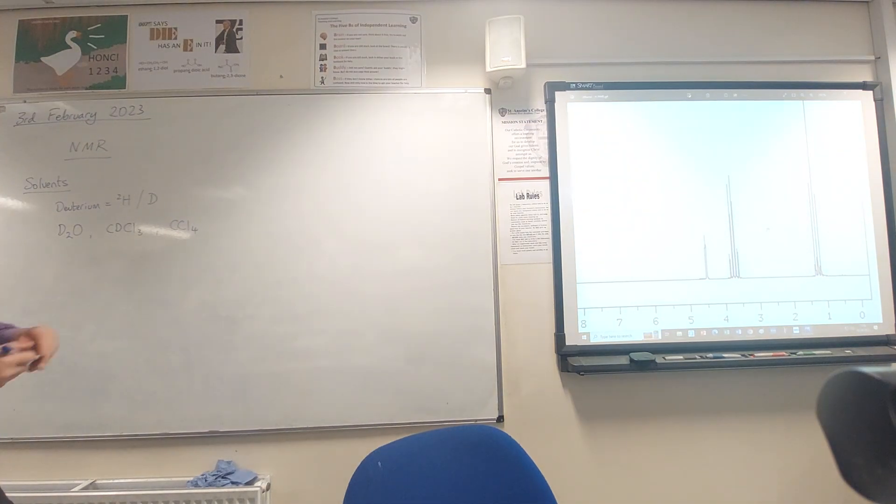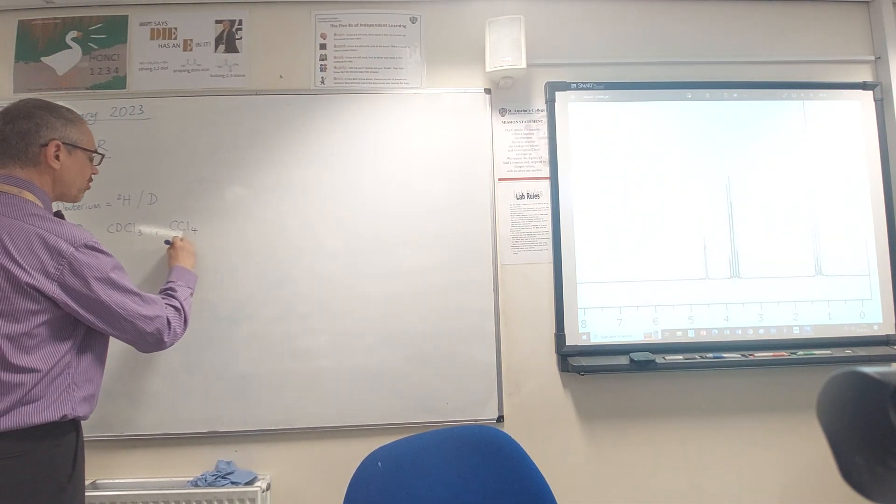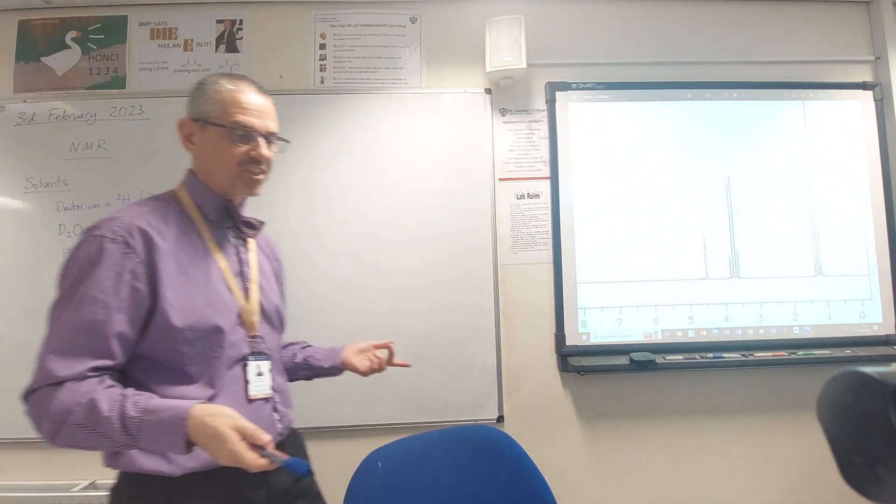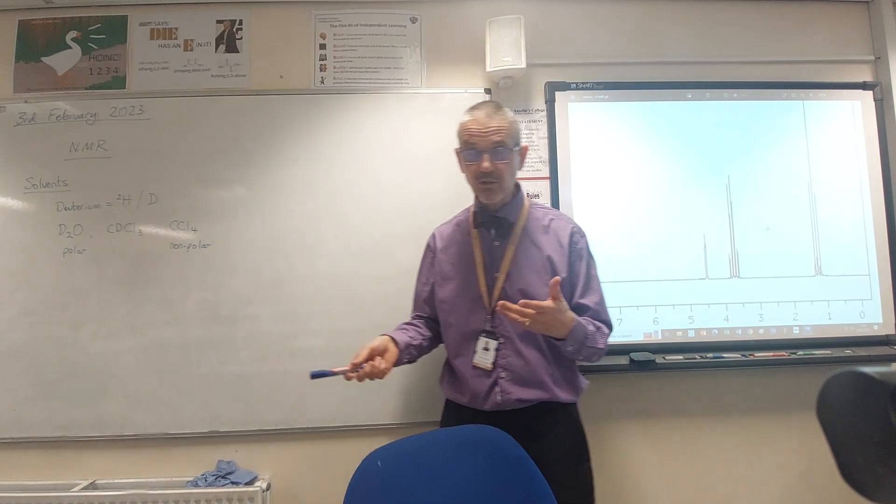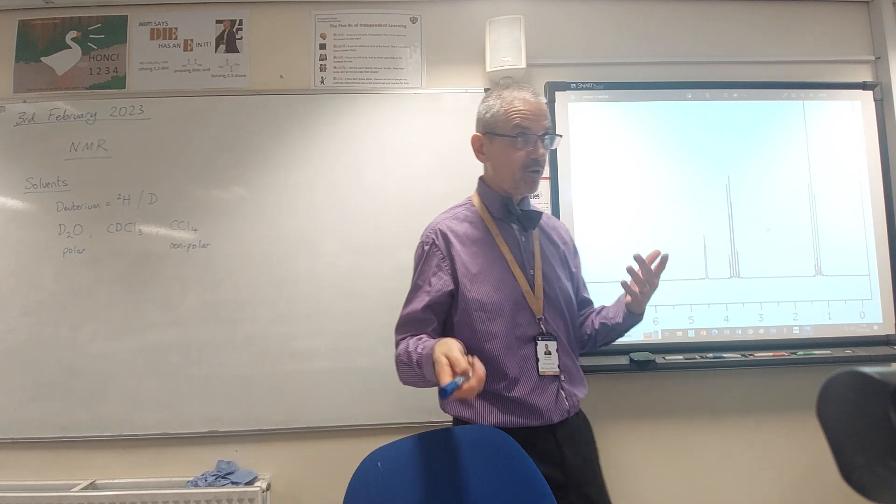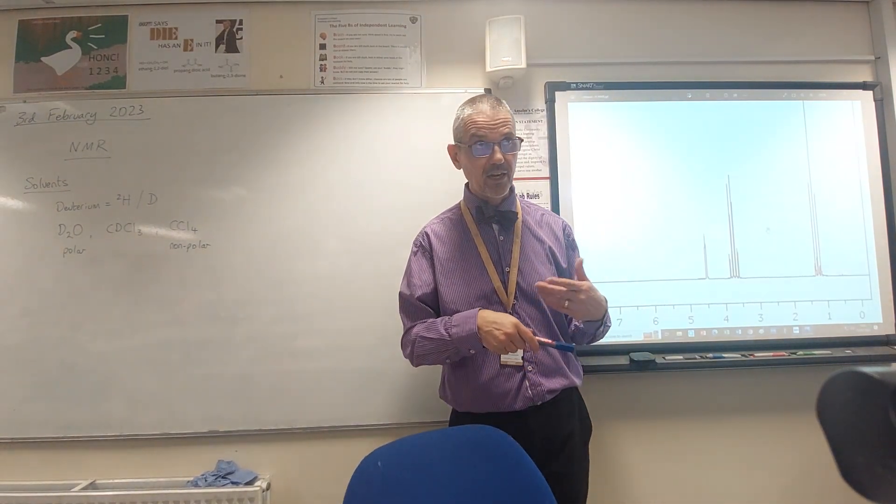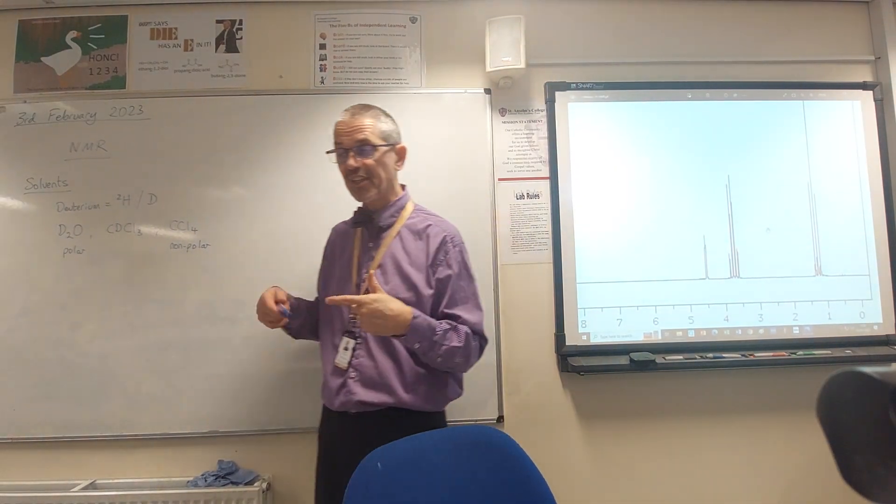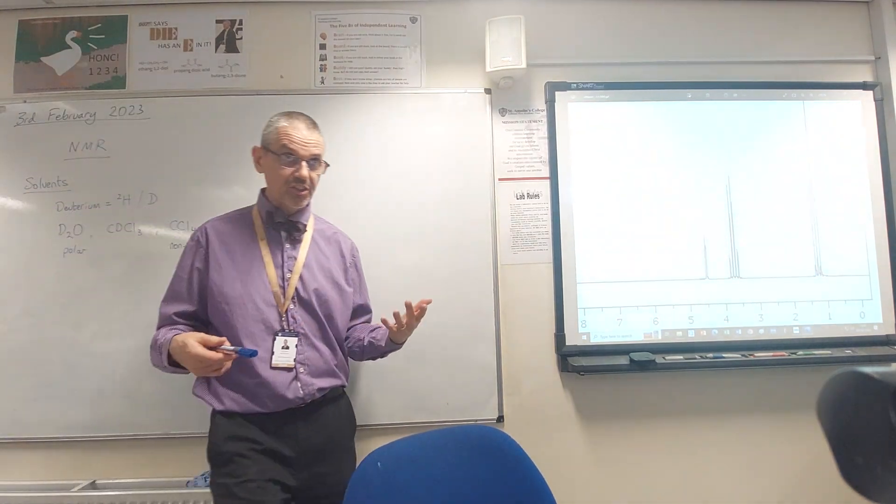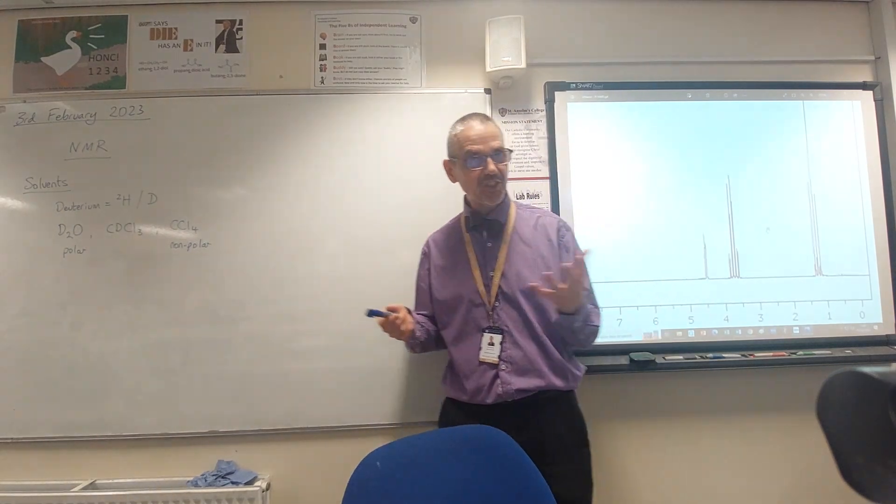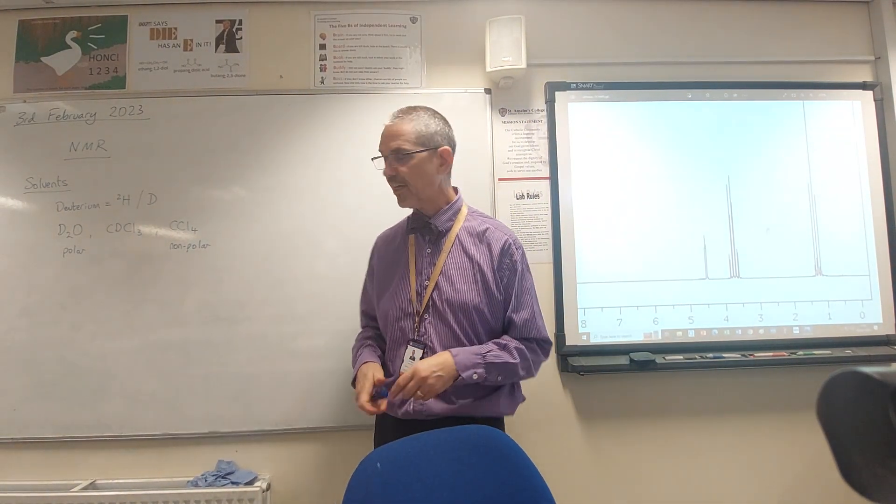This gives us a bit of a range. CCl4 is very non-polar whereas D2O is very polar, and with CDCl3 somewhere in the middle. So if we were dissolving something like an alcohol or a carboxylic acid we might go for a more polar solvent. If we were going for a haloalkane or just an alkane we'd go for a non-polar solvent. So whenever there's a question on the exam that asks you to suggest a solvent you can't just spit out all of those. You need to make a choice based on the polar or lack of polar groups in the molecule.